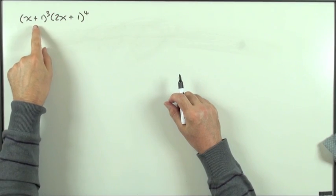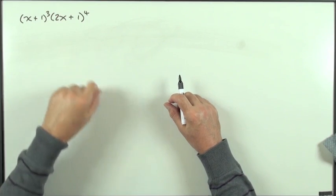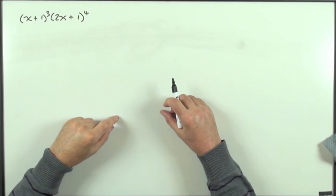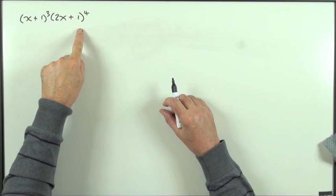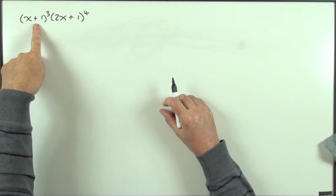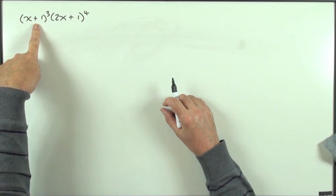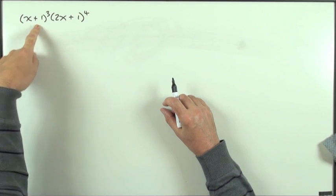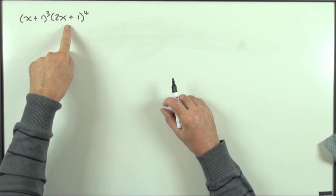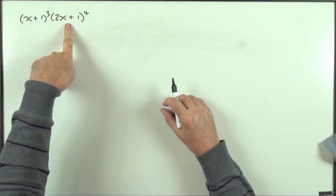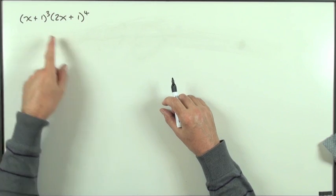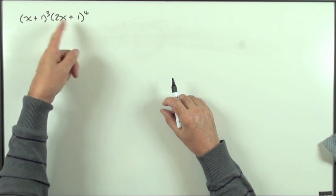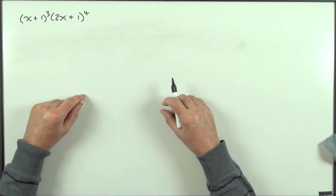On to multiplying binomials together. It might seem fairly innocuous — there's a harmless looking little binomial to a power 3, it's only got 4 terms. There's a harmless little binomial to power 4, it's only got 5 terms, very small numbers: 1, 2, 3, 4 — that's all that appears there.